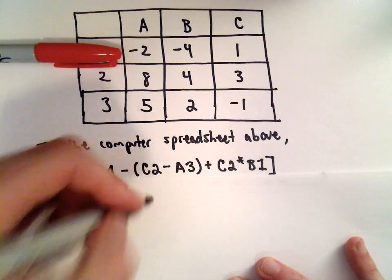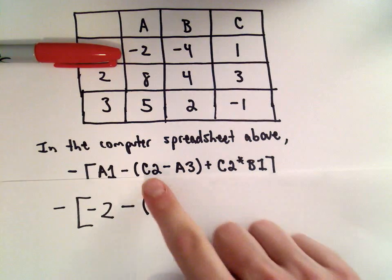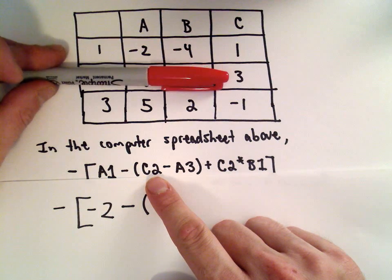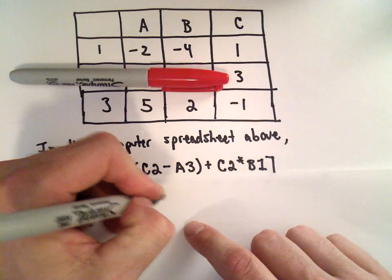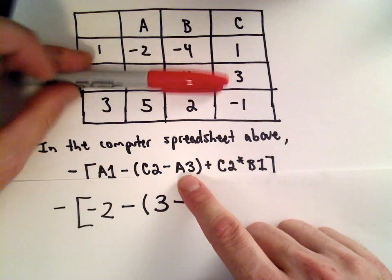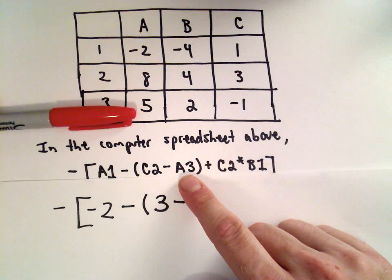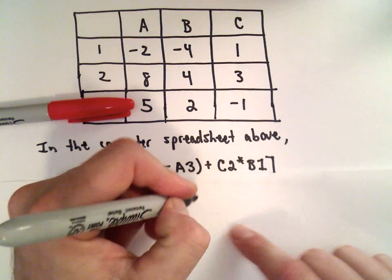Then we have minus. Same thing, I'm going to find C2. So I find the C column and I go down to the second row. That's going to give me a value of 3. Minus A3. So again, I go to the A column and I go down to the third row. That's going to give me the value 5.